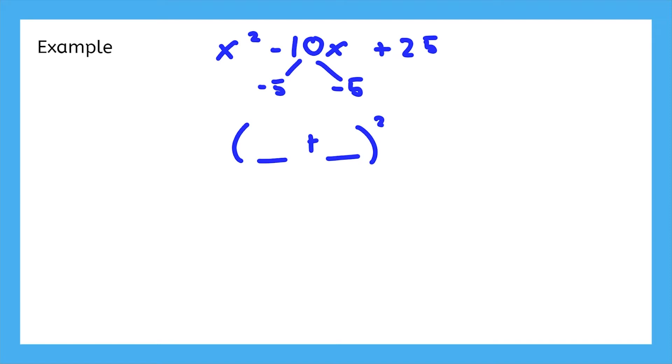By adding 25, we've made this a perfect square trinomial, meaning we completed the square. Now, we could factor it. It's x plus negative 5 squared.